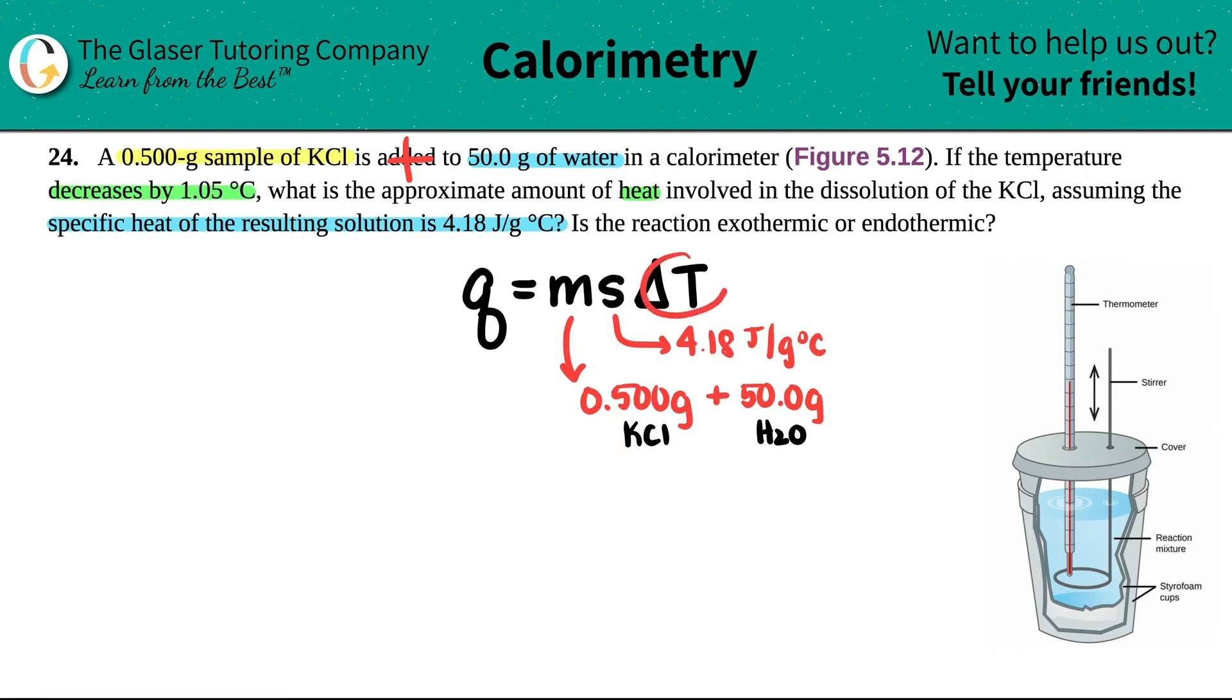And then the Delta T, which is the change in temp. They said that the temperature dropped or decreased by 1.05. This means that the final temp was lower than the initial temp by 1.05. If you have a drop in temperature, your Delta T will start with a negative. So this would be negative 1.05 degrees Celsius.